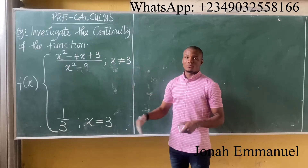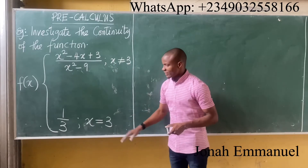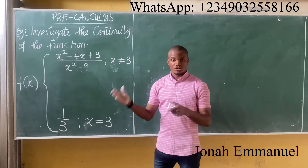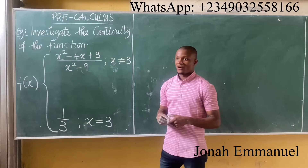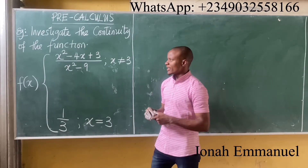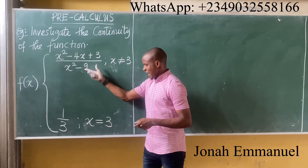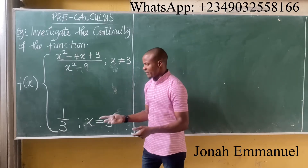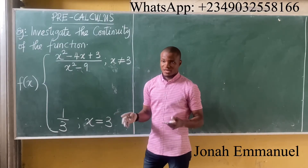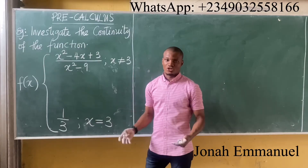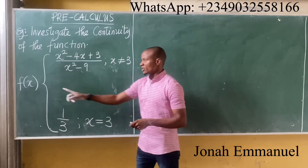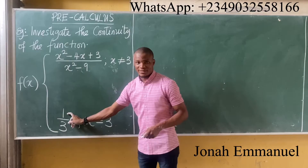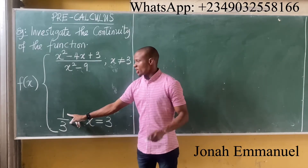So x should not be 3 because it will be indeterminate. To determine if a function of this form is continuous, we take the limit of this function at x equal to 3 using any of the methods from previous classes. If our answer gives us 1/3, then we can say it's continuous; if not, it's not continuous.